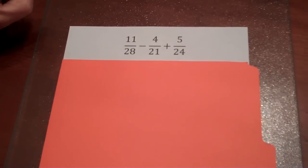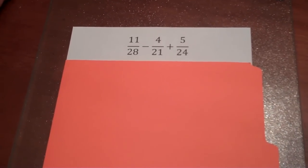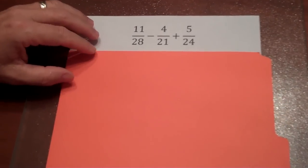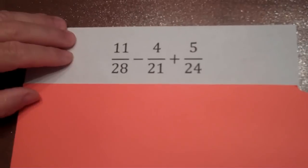To learn how to add and subtract fractions, I'd like to start with an arithmetic example. In this case, I have 11/28 minus 4/21 plus 5/24. Now the first thing you always need to do is factor.